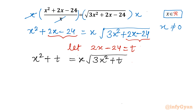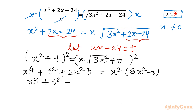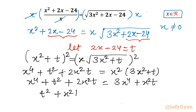Now consider squaring both sides. So squaring the left side: (x² + t)² = x⁴ + t² + 2x²t. Right hand side: x² · (3x² + t) = 3x⁴ + x²t. Taking all terms to one side: t² + x²t - 2x⁴ = 0.